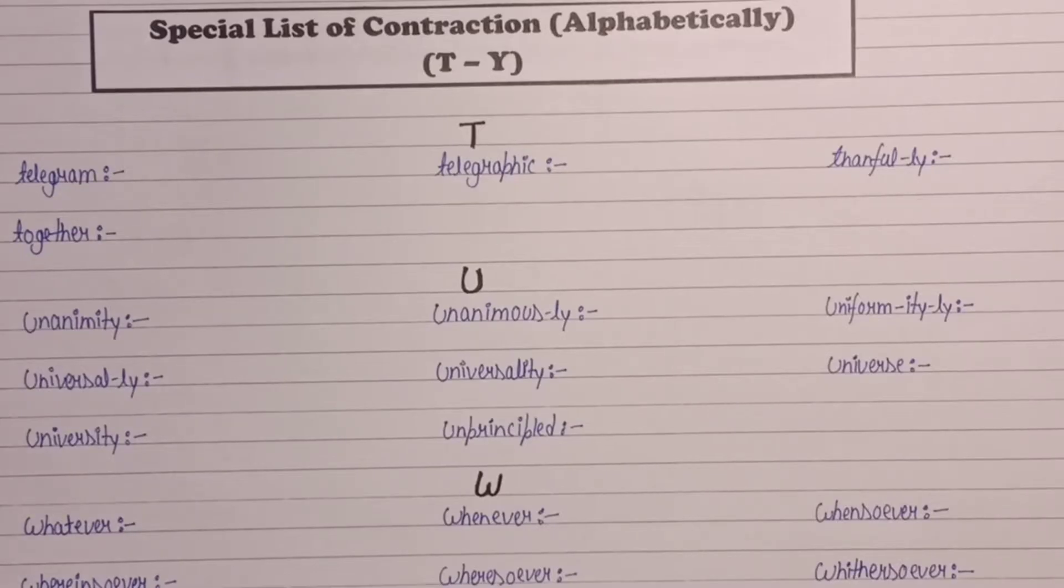Special list of contractions alphabetically from T to Y. This is the final list of contractions ending in today's class. Before this, we have already done A to S in our last classes. So this is the last class of contractions in alphabetical order.